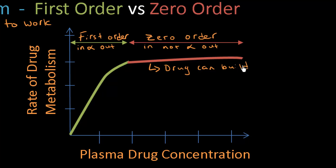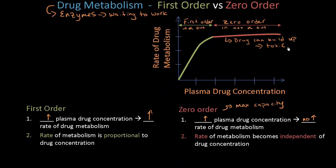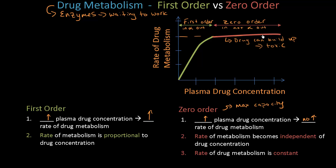This is problematic. We don't like to be in the zero order plasma drug concentration range as clinicians, because the plasma drug concentration is going up but the rate of metabolism isn't going up with it. That means the drug can build up in the body, and if it builds up that can lead to toxicity or toxic side effects. The rate of drug metabolism is constant with zero order kinetics — we have plateaued and are at Vmax.